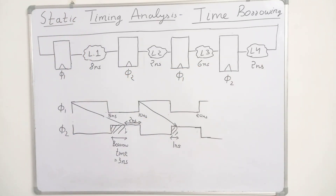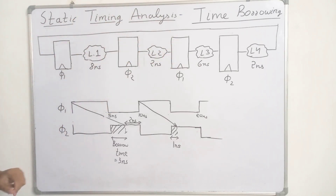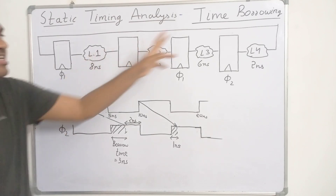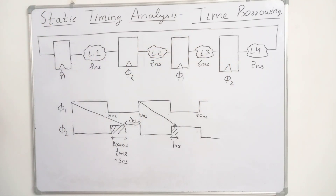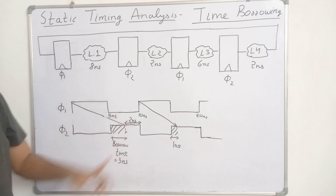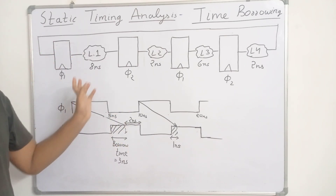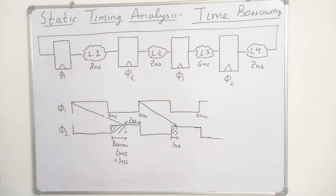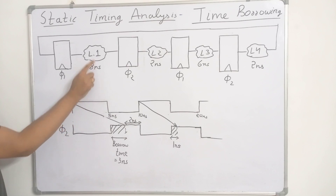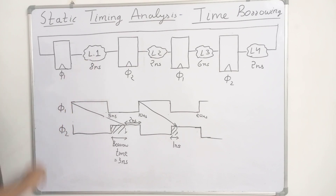If we were to design this circuit using edge-triggered flip-flops, then the clock period has to be at least 8 nanoseconds, because the longest path delay for this combinational logic is 8 nanoseconds. So the minimum clock period has to be 8 nanoseconds.